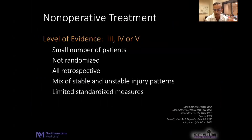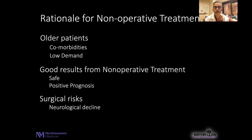With that definition in mind, let's think about what we know about operative and non-operative treatment. Non-operative treatment is very limited in terms of levels of evidence. These are small numbers of patients, retrospective studies, a mix of stable and unstable injury patterns, and very limited use of standardized outcome measures. There is a rationale for non-operative treatment that may ring true to many of us — older patients, the idea that good results can happen with non-operative management, and that surgical risks such as neurological decline lean against surgical intervention.